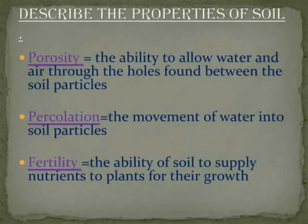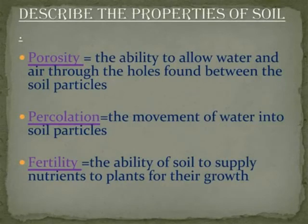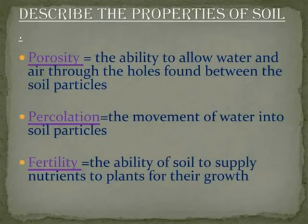Describe the different types of soil. Describe the properties of soil. Porosity: the ability to allow water and air through the holes found between the soil particles. Percolation: the movement of water into soil particles. Fertility: the ability of soil to supply nutrition to plants for their growth.